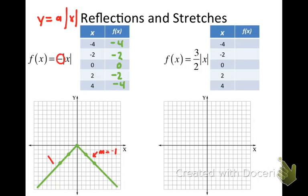The slope of the left side is the opposite of that — positive 1. From left to right you go up 2 over 2, which simplifies to 1. And the vertex is still at 0, 0.